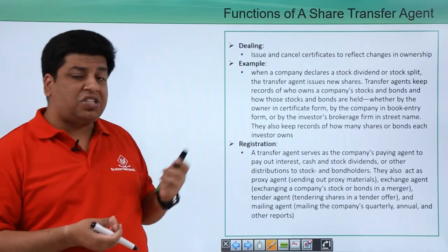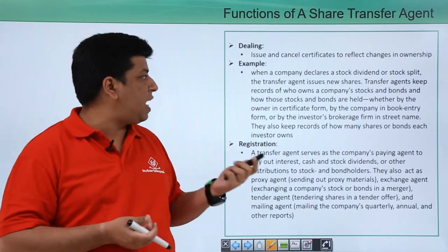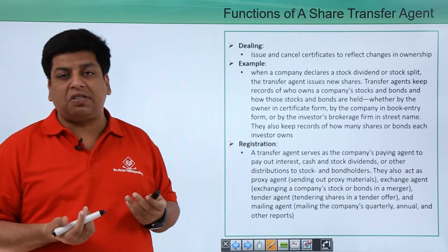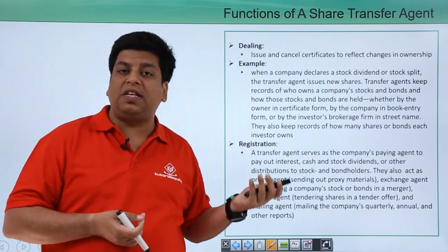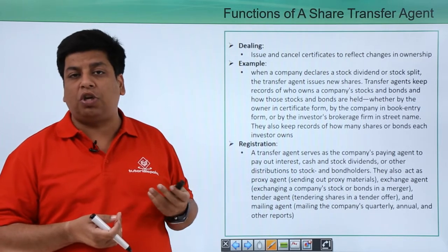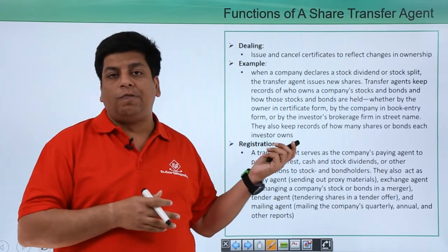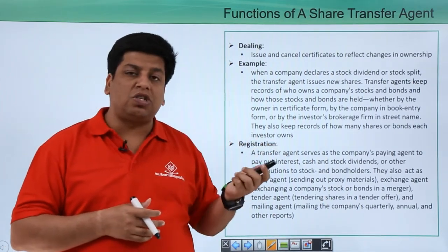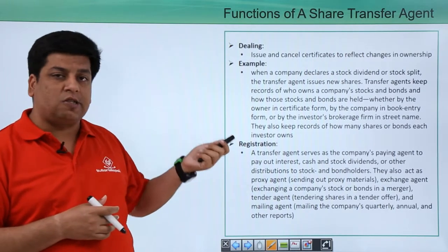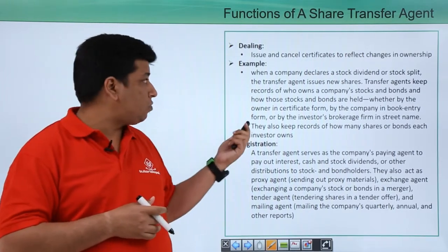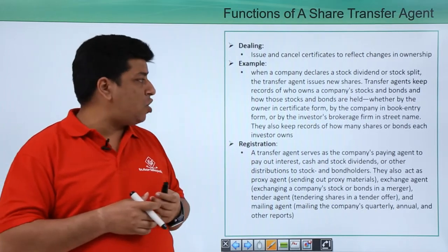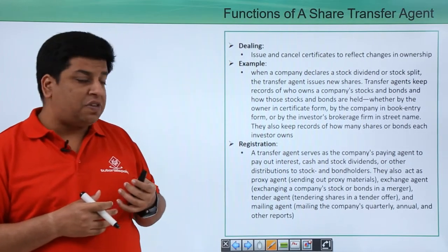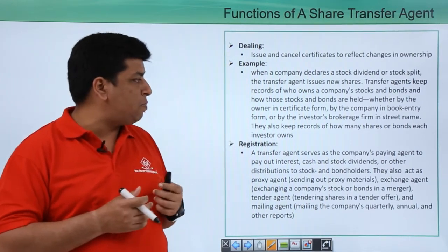The first function is dealing, where they can issue or cancel certificates to reflect changes in ownership. Since there is a secondary market, ownership can definitely get transferred for a particular security from one person to another. For example, when a company declares a stock dividend or stock split, the transfer agent issues new shares.